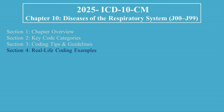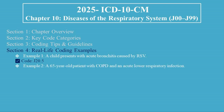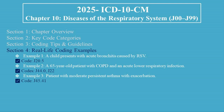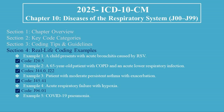Section 4: Real-Life Coding Examples. Example 1: A child presents with acute bronchitis caused by RSV — code J20.5. Example 2: A 65-year-old patient with COPD and an acute lower respiratory infection — codes J44.0 and J22. Example 3: Patient with Moderate Persistent Asthma with Exacerbation — code J45.41. Example 4: Acute Respiratory Failure with Hypoxia — code J96.01. Example 5: COVID-19 Pneumonia — codes U07.1 and J12.82.